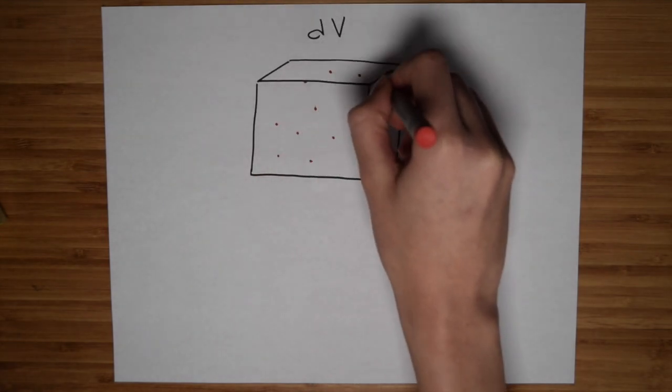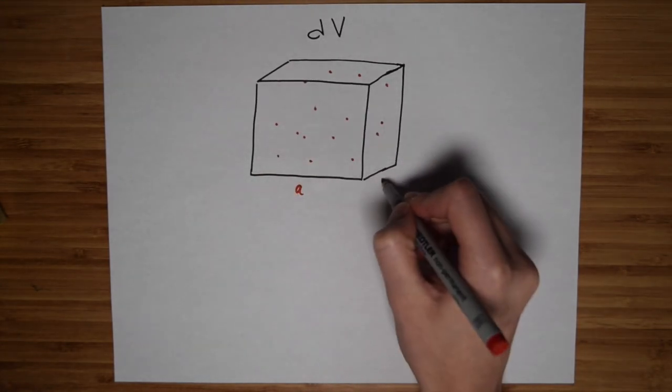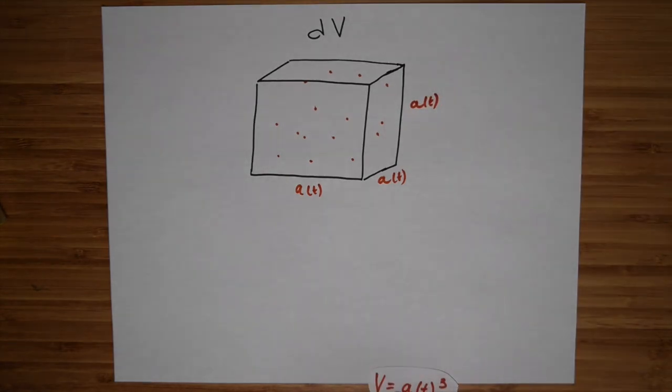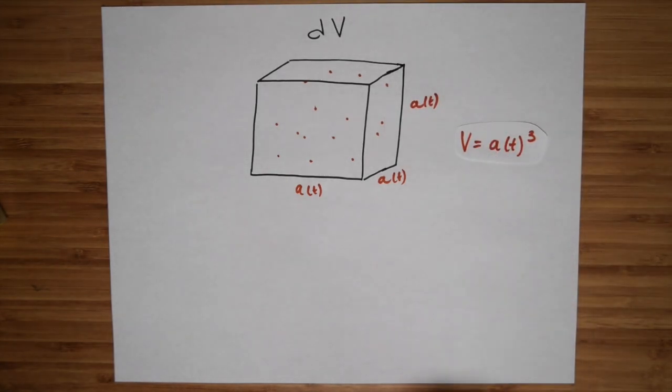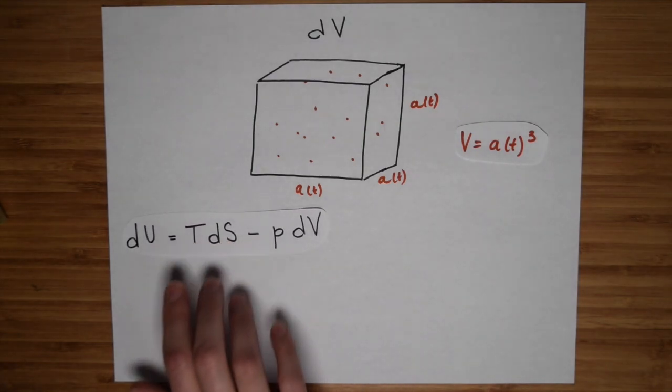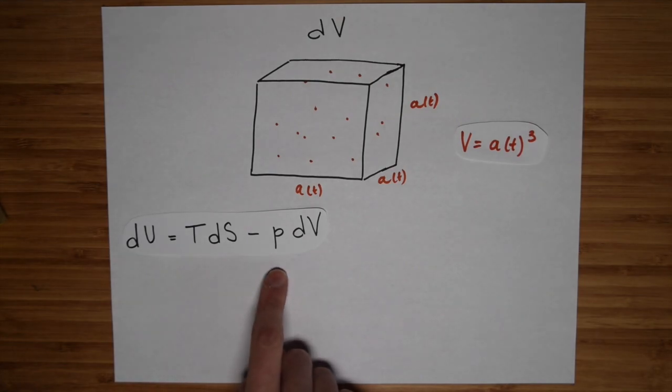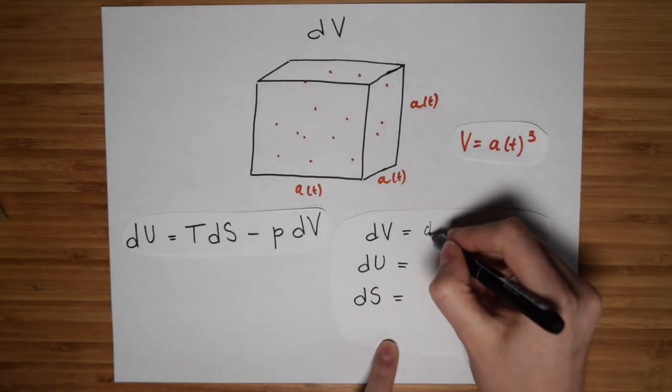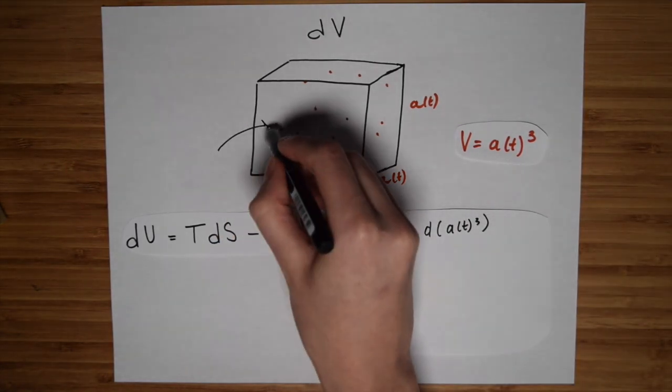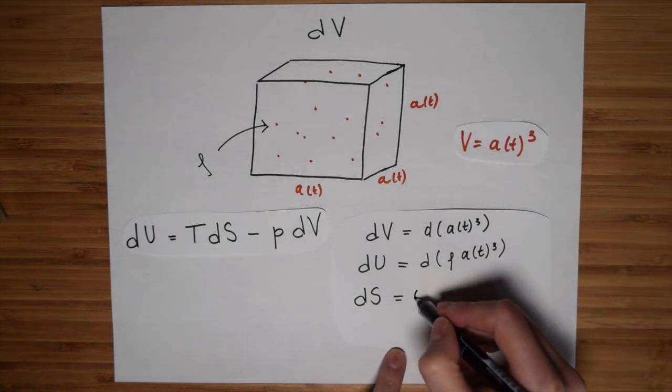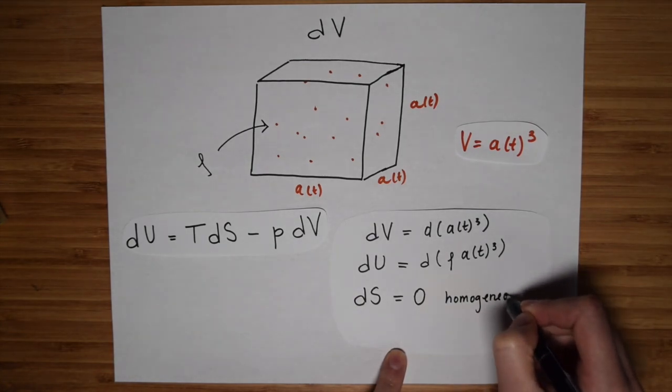Let's consider a small volume of gas. Here, the side lengths of this box we will call a, and we're going to let them vary as a function of time. So quite easily, we can see that the volume of this box is just a cubed. Now, since this is a closed system, we can write down the thermodynamic relation, where du is a small change in the total energy, t is the temperature, ds is a small change in the entropy, p is the pressure, and dv is a small change in the volume. So dv is just the differential of v defined above. We get the total energy by multiplying the energy density by the volume. ds is zero, because remember, we assumed homogeneity, which extremizes entropy.